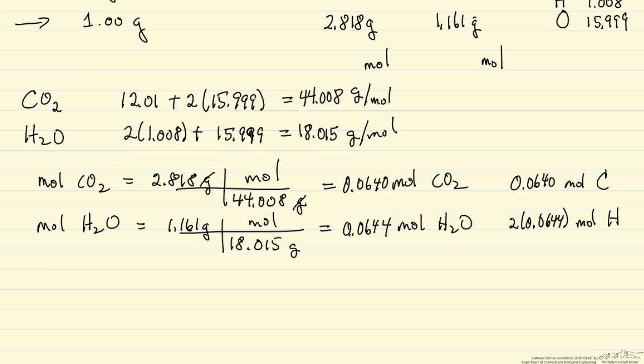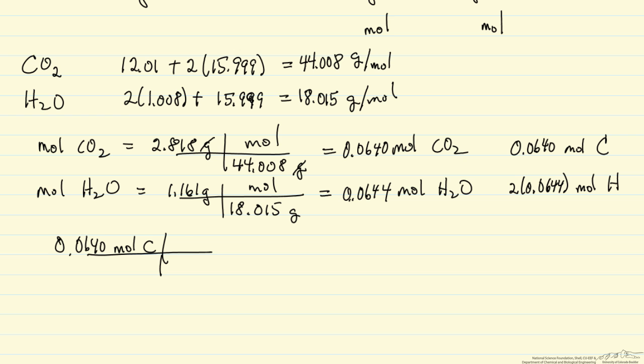I need to now calculate the mass of 0.0640 moles of carbon. I have 0.0640 moles of carbon and 12.01 grams of carbon per mole. So this gives me the grams of carbon in my starting compound.